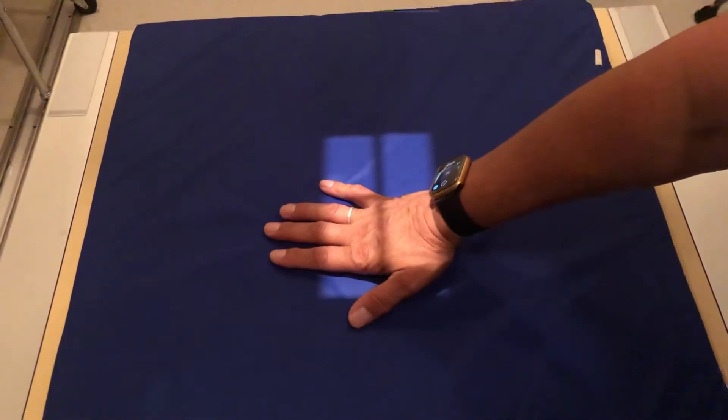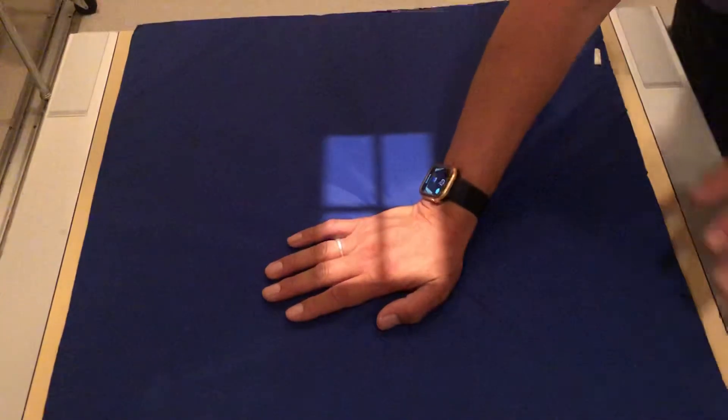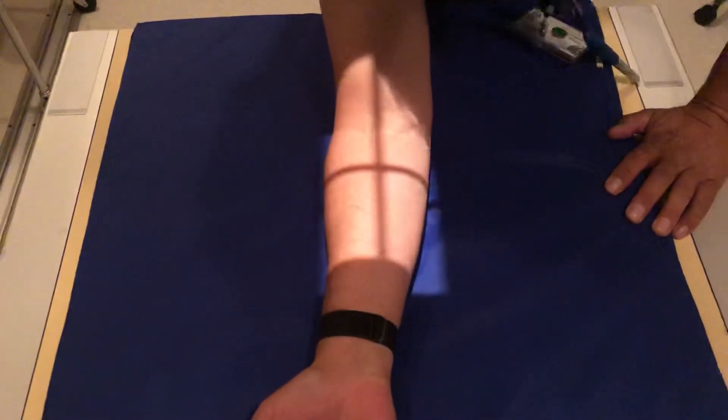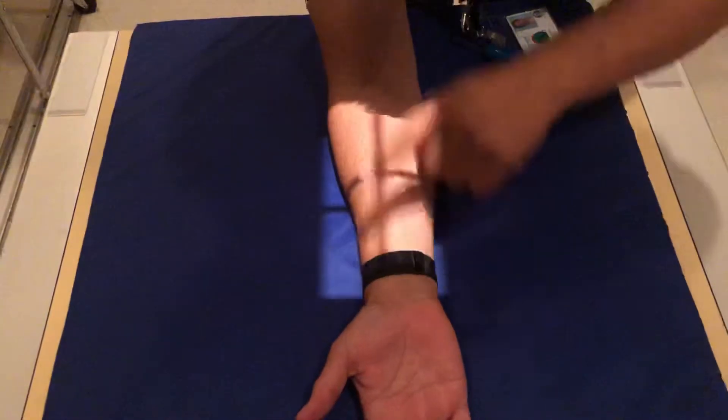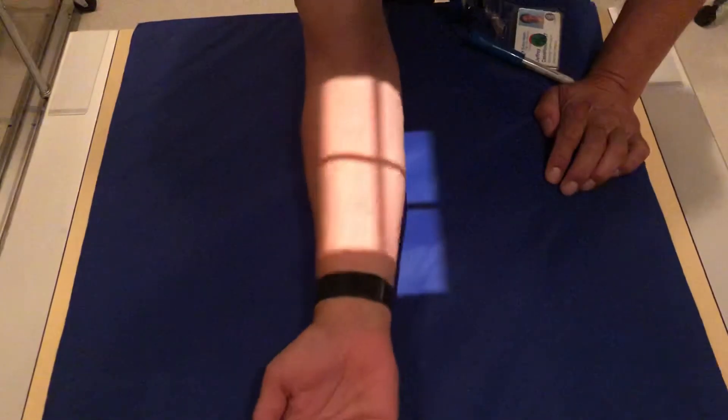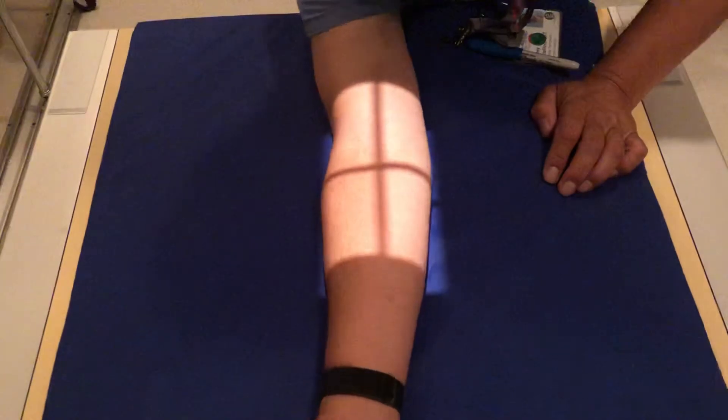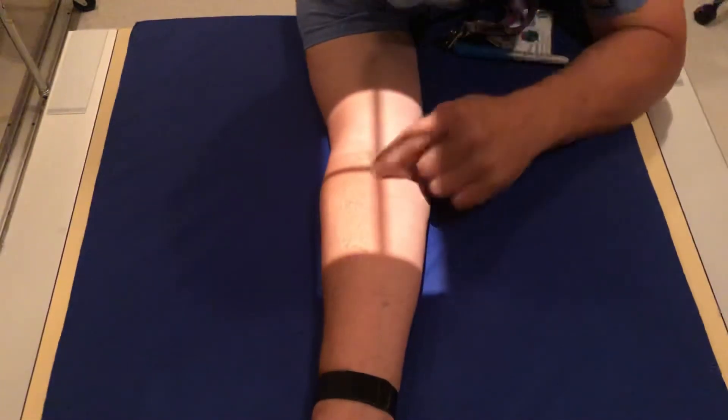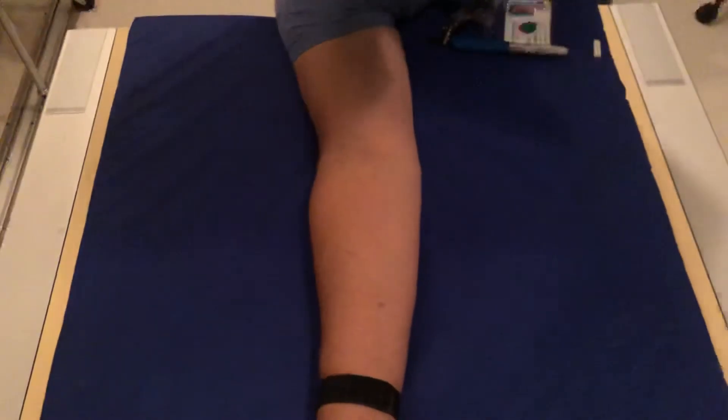and then a 90-degree true lateral. For the AP, you're going to want to make sure, just like the forearm, that the wrist, elbow, and shoulder are all in the same plane, and you're going to center right in the middle of the elbow there.